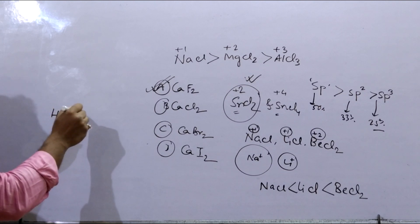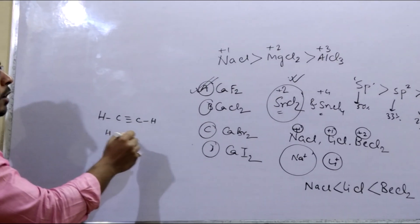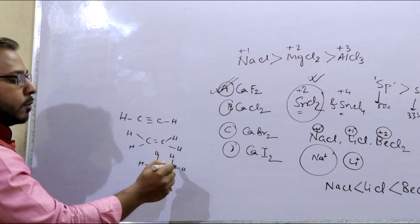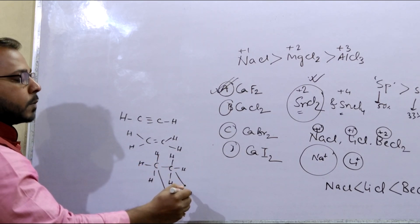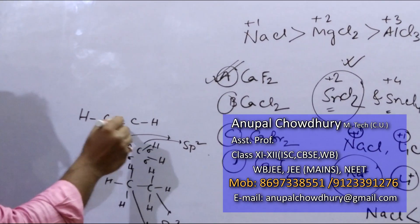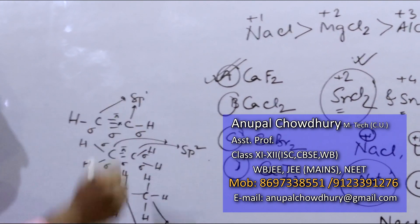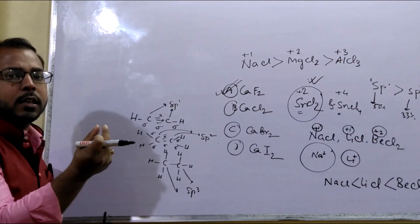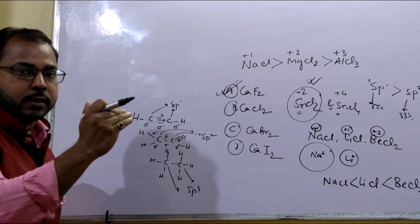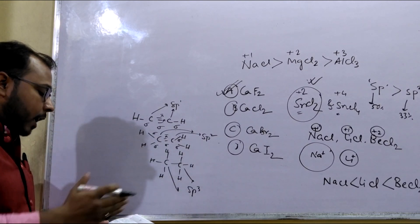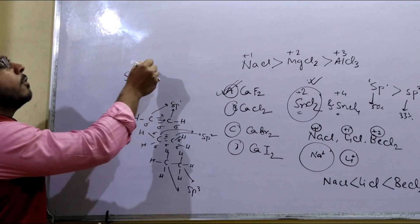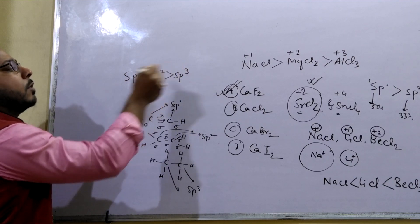Considering ethane, ethylene, and acetylene: in ethane, all bonds are sigma, so both carbon atoms are SP3. In ethylene, there is one pi bond, so the carbons are SP2. In acetylene, there are sigma and two pi bonds, so those carbons are SP. Acetylene has some acidic property in the presence of a strong base, but ethylene and ethane cannot liberate H+. Therefore, the correct order of electronegativity of hybrid orbitals of carbon is: SP > SP2 > SP3.